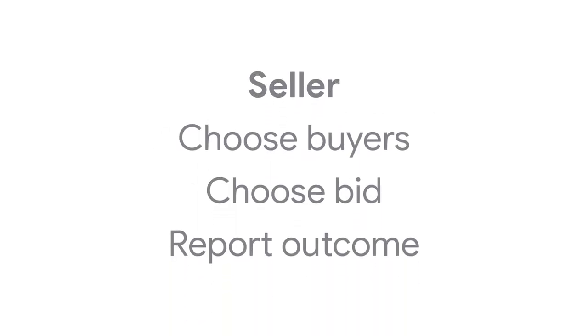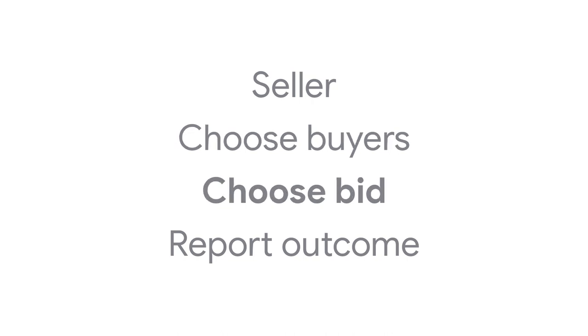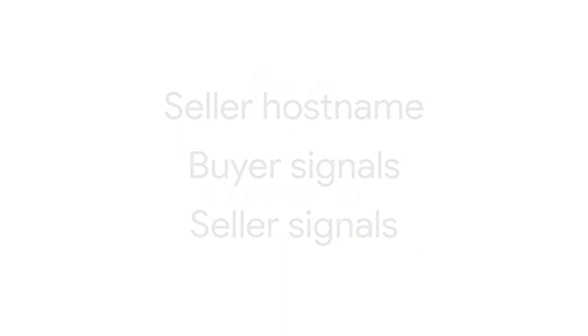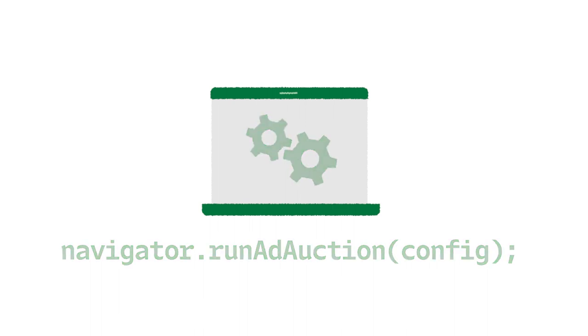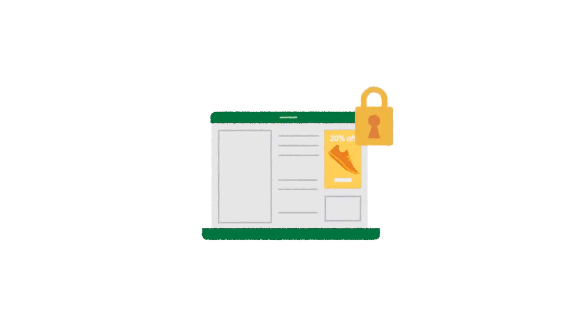The seller in this ad auction has three jobs: firstly, choose which buyers can participate; choose which bid is most desirable based on each bid's price and some other metadata; and finally, report the auction outcome. The seller initiates the ad auction by calling runAdAuction with data including the host name of the seller, signals from buyers and the seller, and a URL for auction decision logic. The auction returns data about the winning ad, and that data cannot be accessed by the publisher's site except to render the ad in a fenced frame. Finally, the ad is displayed.